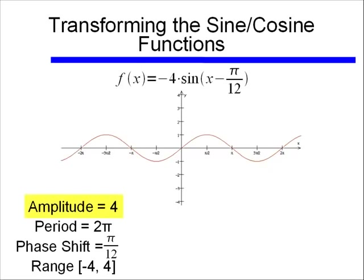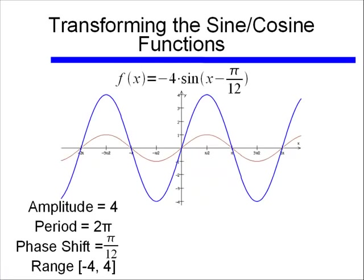If we have an amplitude of 4, that means instead of going from negative 1 to positive 1, the range is going to be from negative 4 to positive 4. But if we stop there we'd be making a mistake, because we have to go back to our original function.